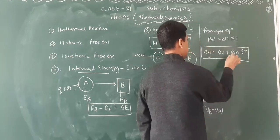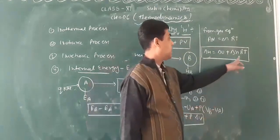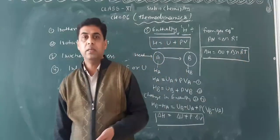Delta n is the change in number of moles, R is the gas constant, and T is temperature in Kelvin.